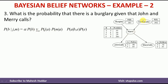There is one more unknown: earthquake — whether there is an earthquake or not, we don't know. So I write summation over E here. The summation over E is applicable only to the terms where E is present. One thing to remember: whenever you want to write the joint probability distribution, start from bottom to top, and whatever is known to you, keep it on the left-hand side.